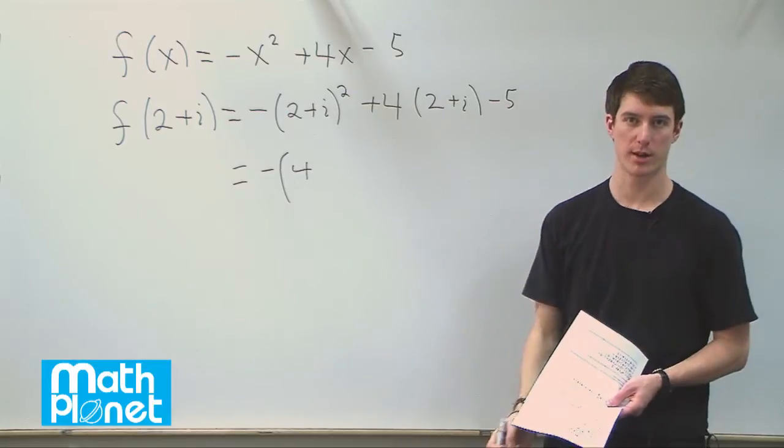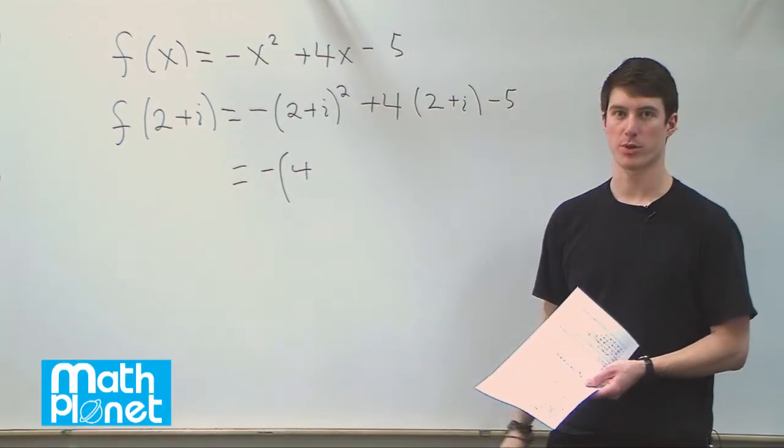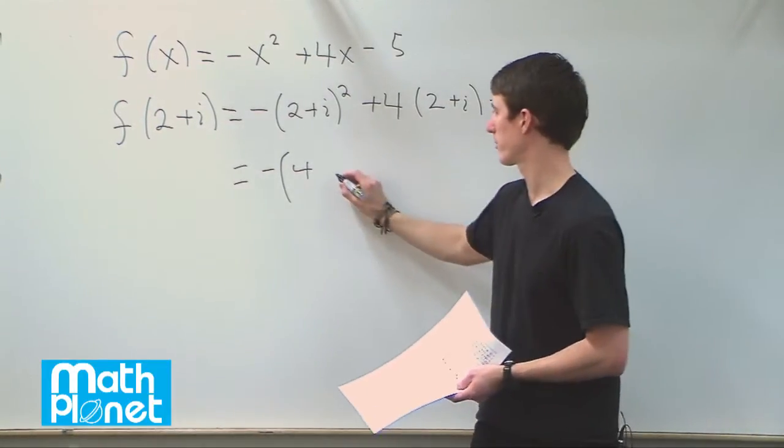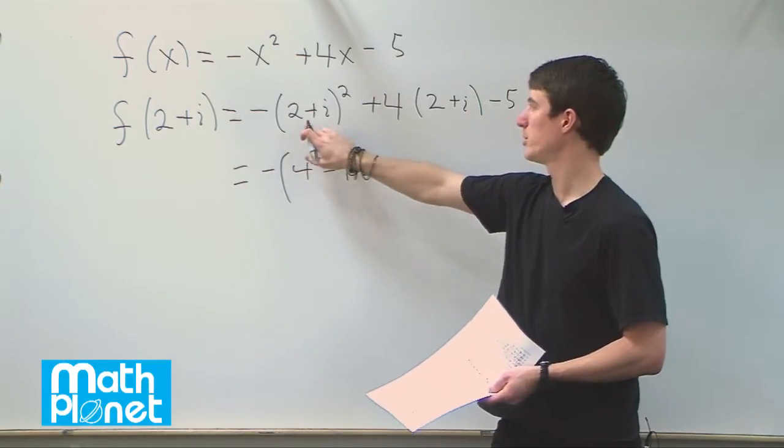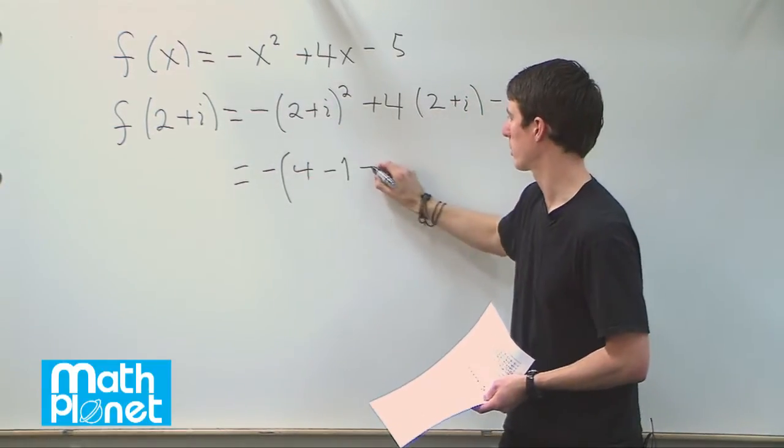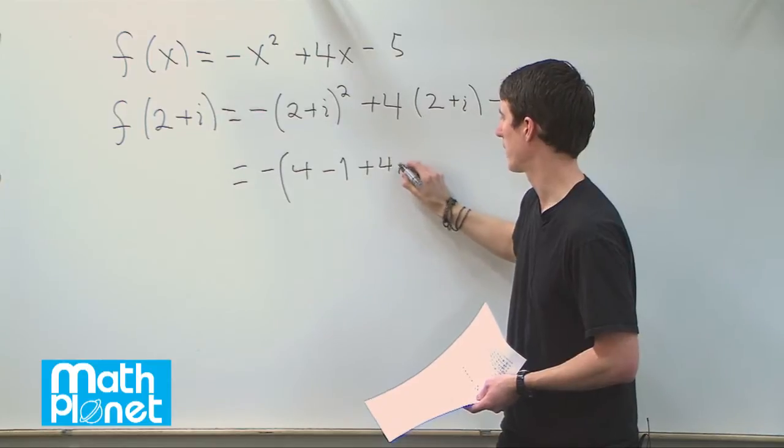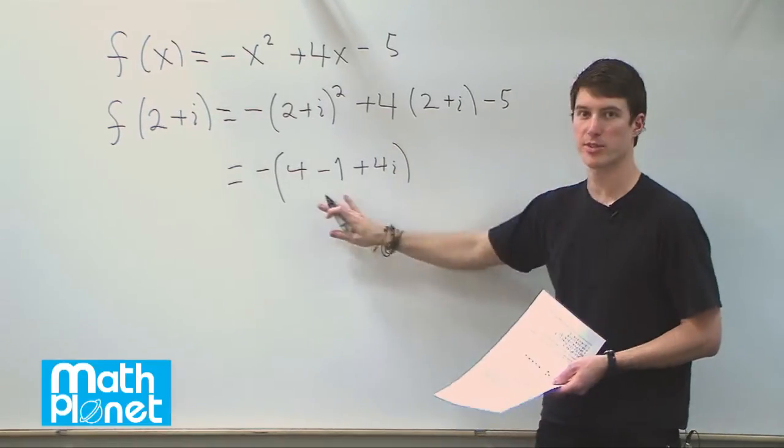i times i is i squared, but i is of course the square root of negative 1, so i squared is just negative 1. And then we have 2 times i plus 2 times i, or plus 4i. So we still have some i's in here as well.